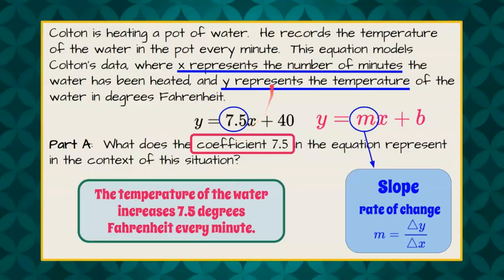So again, y to x, temperature to minutes. How is the temperature rising per minute? We know it's rising because it's positive. So the temperature is increasing 7.5 degrees per minute.